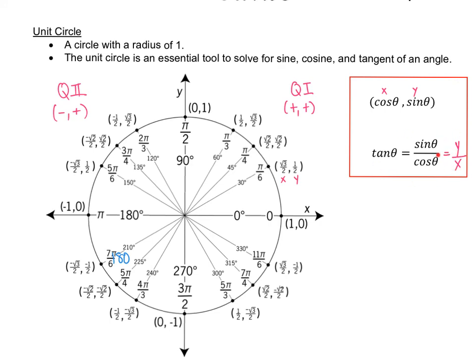Next time we work on the unit circle, we'll talk about quadrants 3 and 4. That's it for this video — let it soak in. Take a look at it, ask yourself where did I get these coordinates and where did I get these radian angles. First and second quadrant — let it soak, and I'll see you guys in the next video.